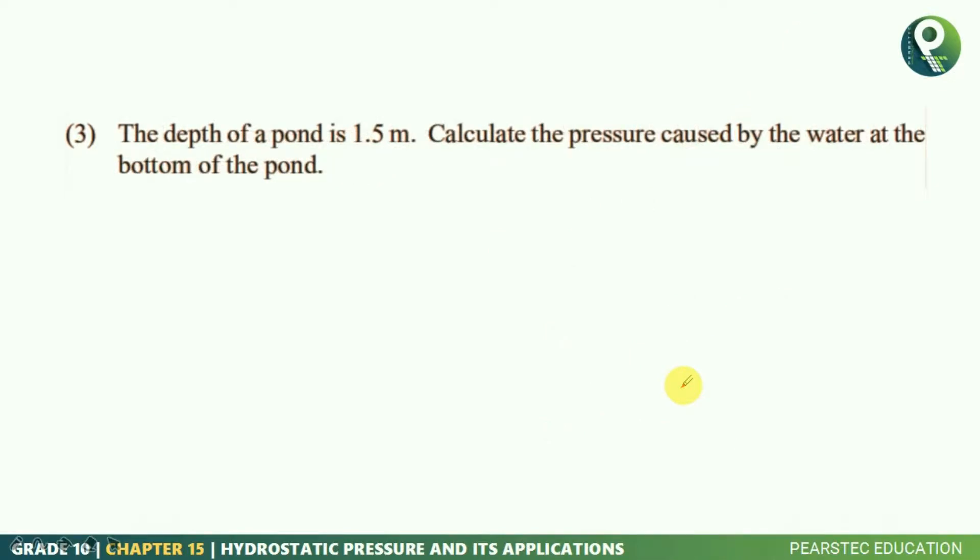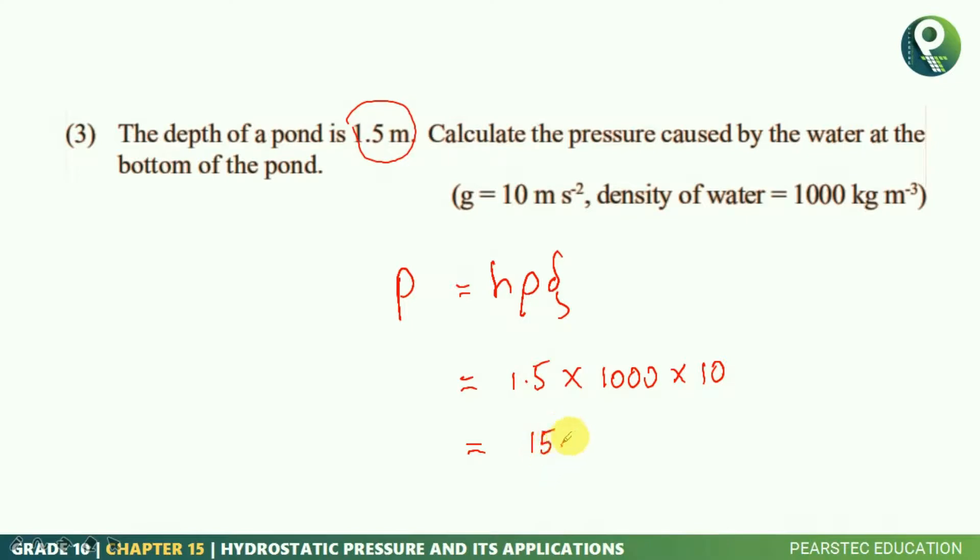The next question is very simple. The depth of a pond is 1.5 meters itself. Calculate the pressure caused by the water at the bottom of the pond. We will apply also P = hρg. Write height, density, and gravity. 1.5 multiplied by 1,000 multiplied by 10. In this scenario, the answer will come as 15,000. So if you are solving this issue.